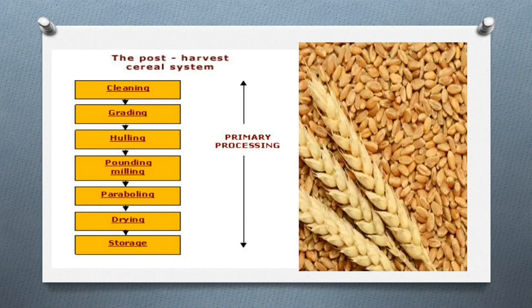Let's move further to the post-harvest cereal system. The main processes we are going to discuss in our further slides are: first, cleaning; then grading; then hulling; then pounding; milling; then parboiling; then drying; then storing.